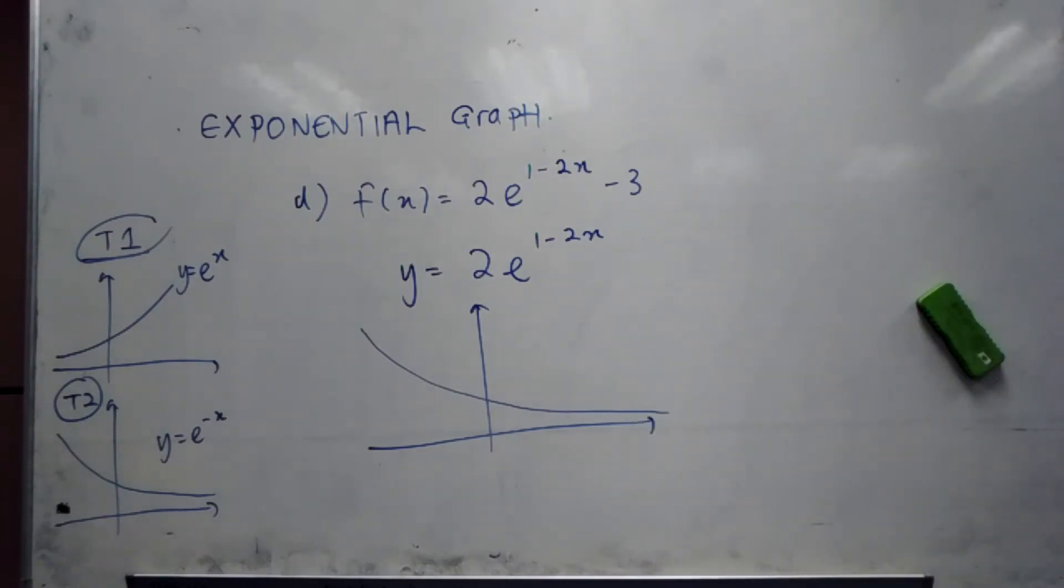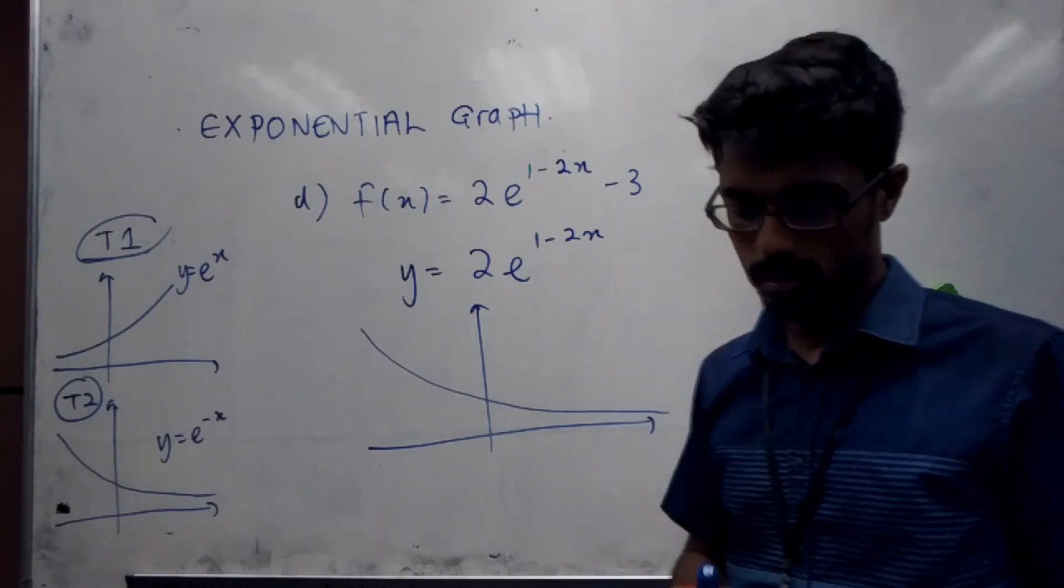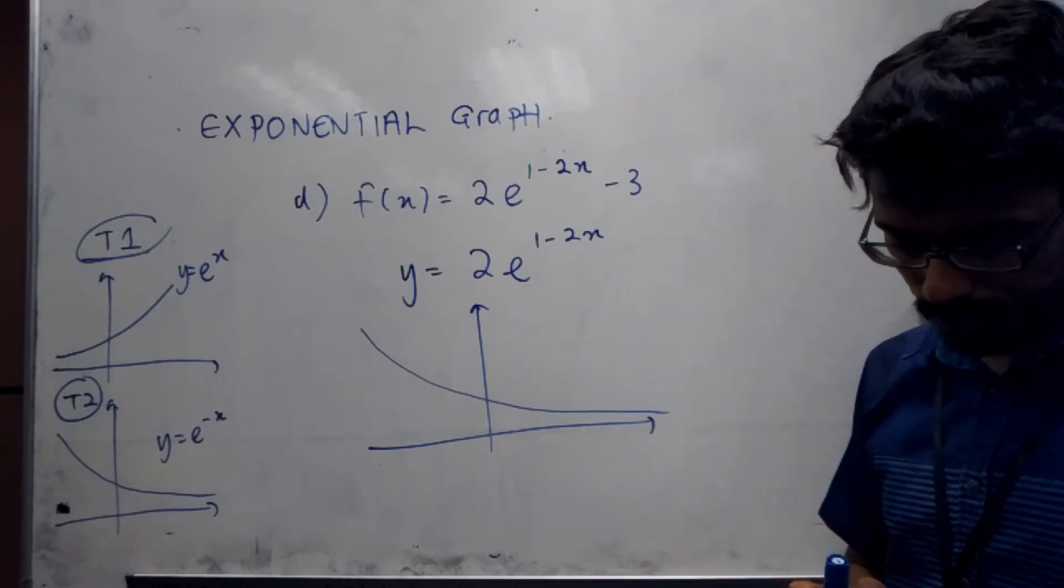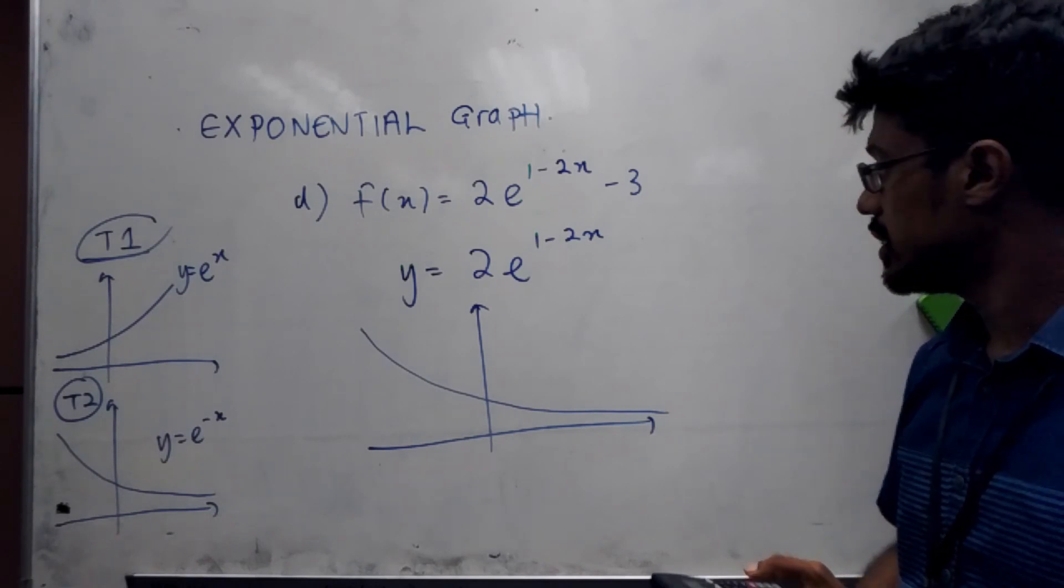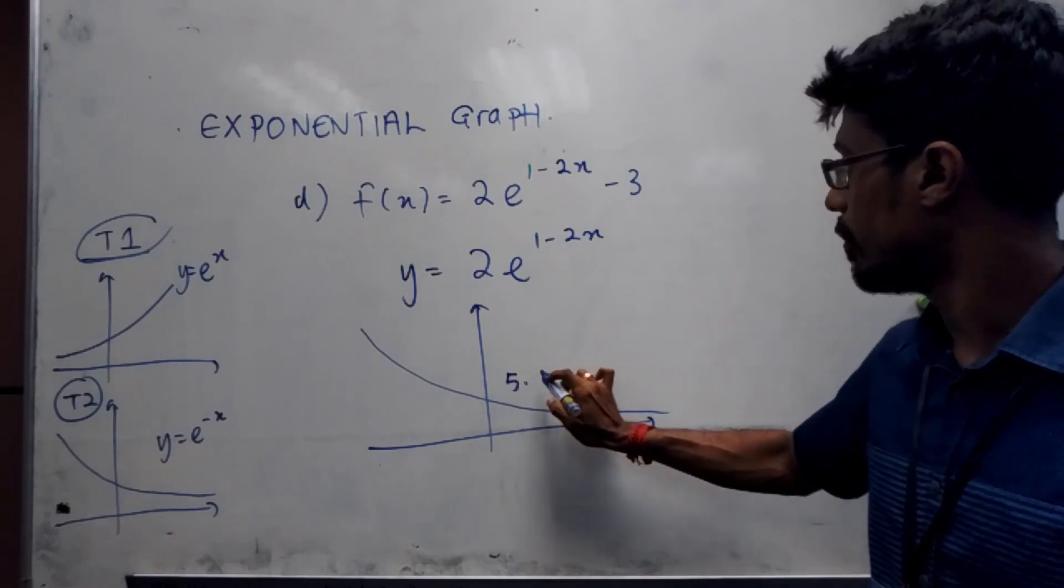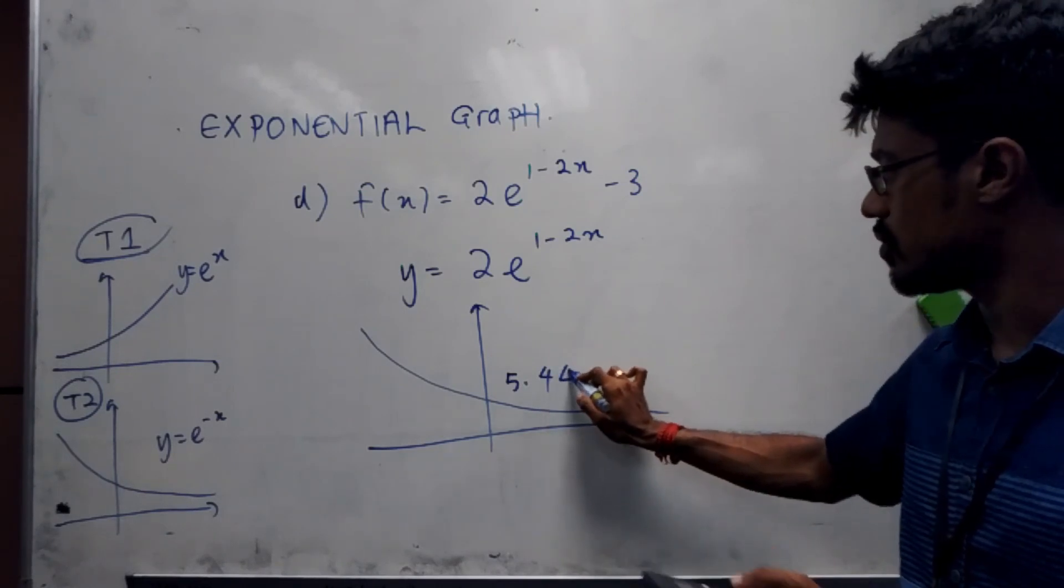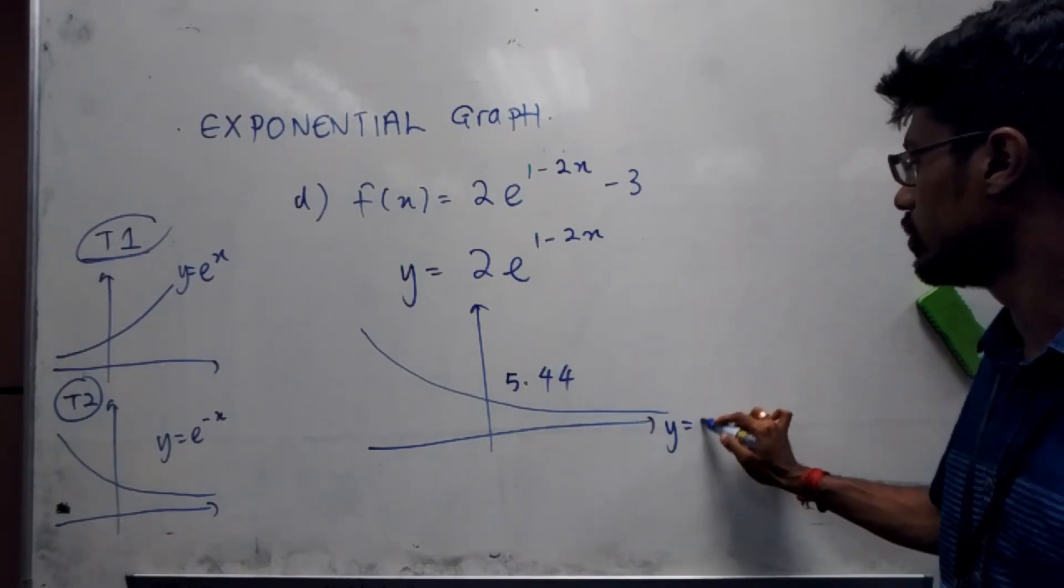So that is going to be x equal to zero. So plug in x equal to zero, so we are going to get e power one, so that is going to be 5.44, and this is going to be y equal to zero.